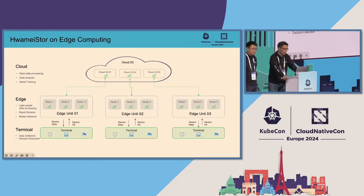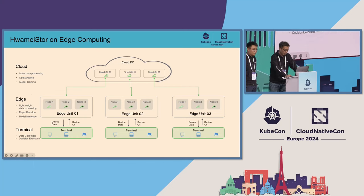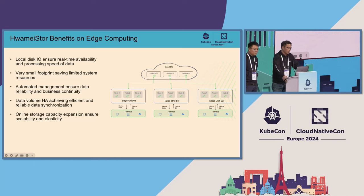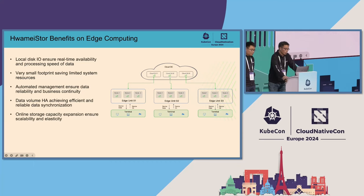Data volumes can be deployed on both the cloud side and the edge side. At the cloud side, HwamiStore can provide data volumes for middleware or KubeVirt as discussed before, and also for data analysis and large model training. At the edge side, it can also serve middleware, KubeVirt, and lightweight data processing. The benefits of HwamiStore for edge computing include: local disk I/O ensures real-time availability and data processing speed; the Linux kernel-mode LVM technology takes a very small footprint, saving limited system resources; automated management ensures data reliability and business continuity; and high-availability data volumes achieve efficient and reliable data synchronization.